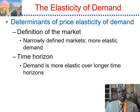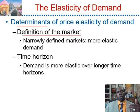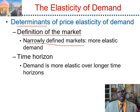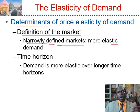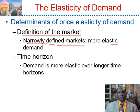Another determinant of the price elasticity of demand is the definition of a market. The market can be defined narrowly or broadly. Usually, a narrowly defined market tends to have more elastic demand — for instance, the market for ice cream. On the other hand, the market for food tends to have less elastic demand.